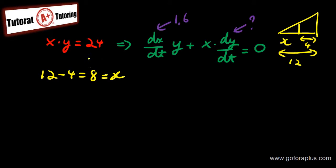If my x is 8, what is my y? So all you need to do is plug it back into the equation that you found. If x is 8, so 8 times y equals to 24. So therefore, y equals to 3.